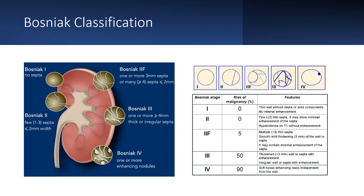If cysts are found to be minimally complex — with thin septae, thin calcifications, non-enhancing, and less than three centimeters in size — they require no further workup. If the cysts do not meet this criteria, further workup is warranted as they are considered high risk for malignancy. If the diagnosis is unclear, you may want to get a CT urography to better visualize the cysts.